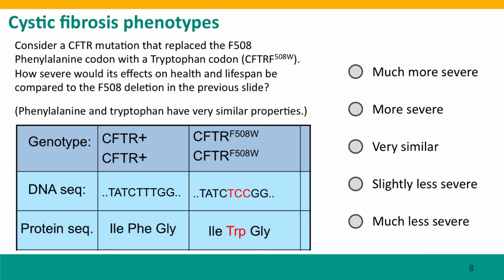Here's a question for you. This is a question where you have to work at making connections between changes in genotype and changes in phenotype by thinking about how a particular change to a DNA sequence is going to change a protein's function. The question asks you to consider a mutation at the same place as the delta F508 mutation, but instead of deleting the phenylalanine 508 codon, this mutation just changes the DNA sequence so that it's now a tryptophan codon. How severe would you think this mutation's effect on health and lifespan would be relative to the deletion of the phenylalanine 508 codon?